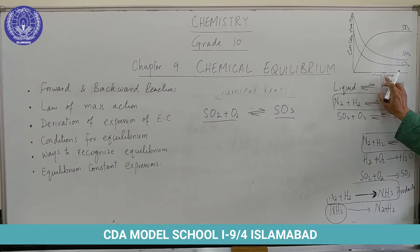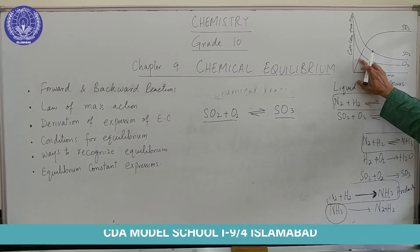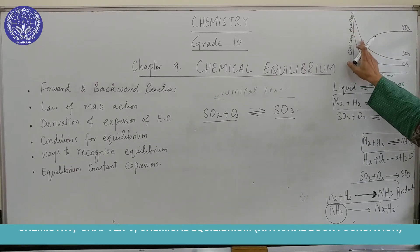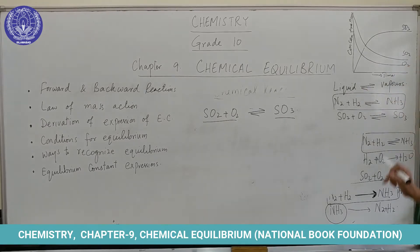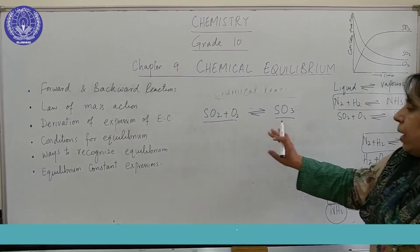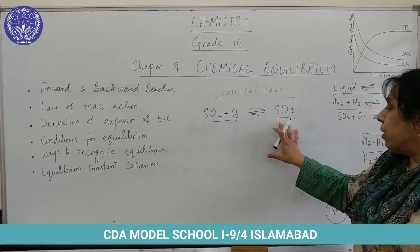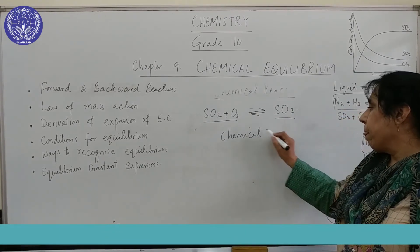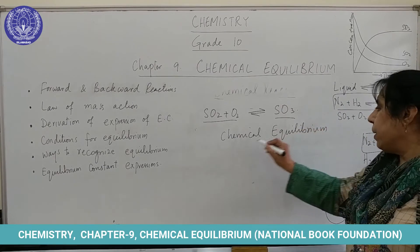Now let's come to the graph. As you can see, this graph is plotted against time and concentration. You can see that the concentration of SO₃ is gradually increasing and the concentration of SO₂ and O₂ is gradually decreasing. A point will come when the concentration of both the reactants and the products will be the same, and this point — at which the concentration of the reactants and the products is the same — is called chemical equilibrium.